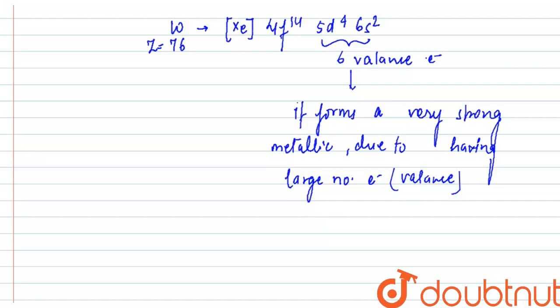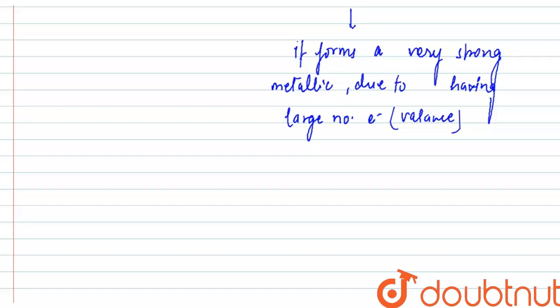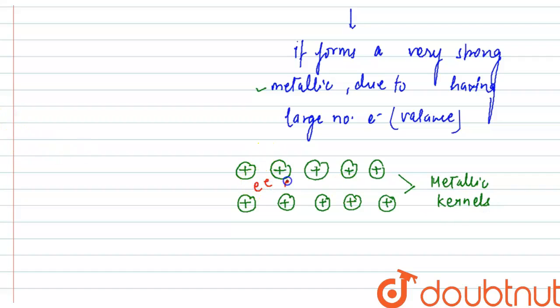Now, what is the reason that having a large number of valence electrons affects the strength of metallic bonding? To understand that, we need to understand the concept of metallic bonding through the electron sea model. Metallic bonding means metals behave as metallic kernels—positive ions which are dipped or immersed into a sea of electrons. These are called metallic kernels or metallic ions.